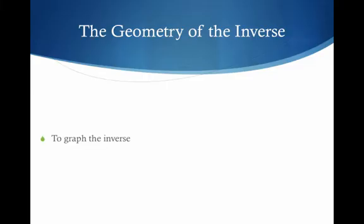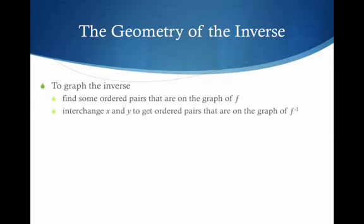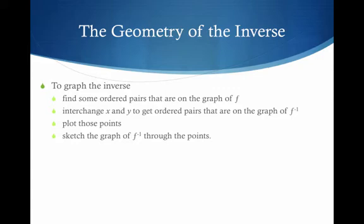So the geometry of the inverse. To graph the inverse, we can find some ordered pairs that are on the graph of f. How do those ordered pairs change on the inverse? Hopefully all of you are thinking that means the x and y's flip, so the ordered pairs flip. We interchange x and y to get ordered pairs that are on the graph of f inverse. We plot those points and then sketch the graph of f inverse through the points.